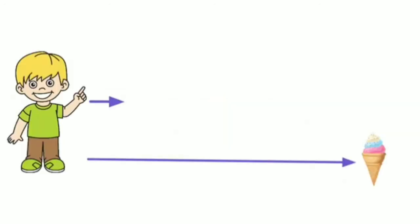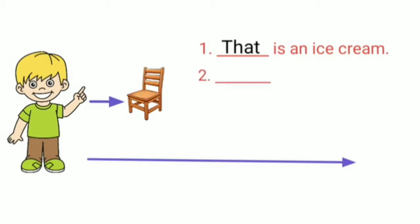Now we will see our review. Children, can you see — the ice cream is far from me, so which word do we use? Yes, we write 'That is an ice cream.' Now can you see the chair is near to the boy, so since it is near, which word do we write? Yes — 'This is a chair.'